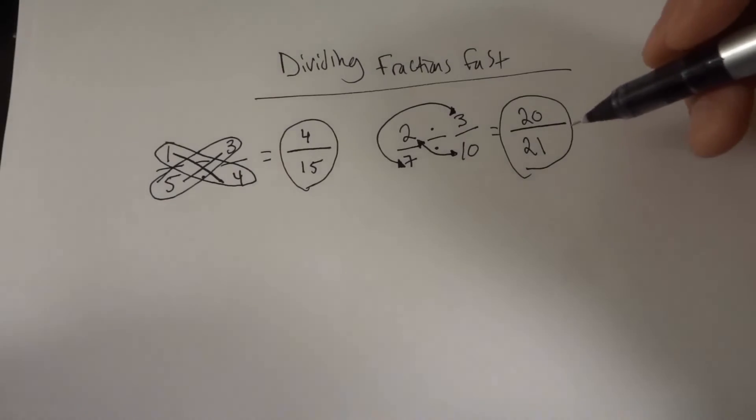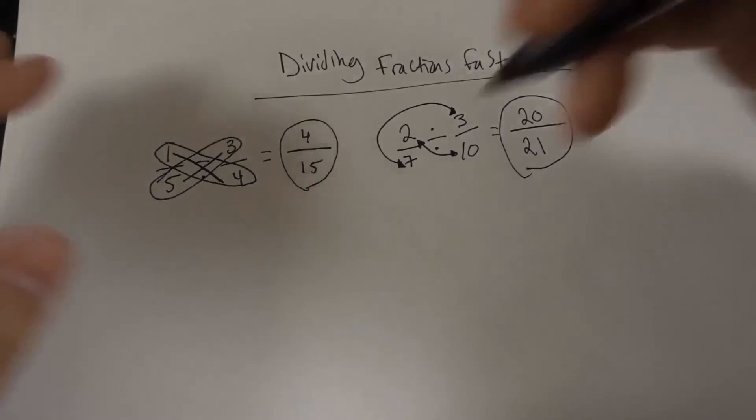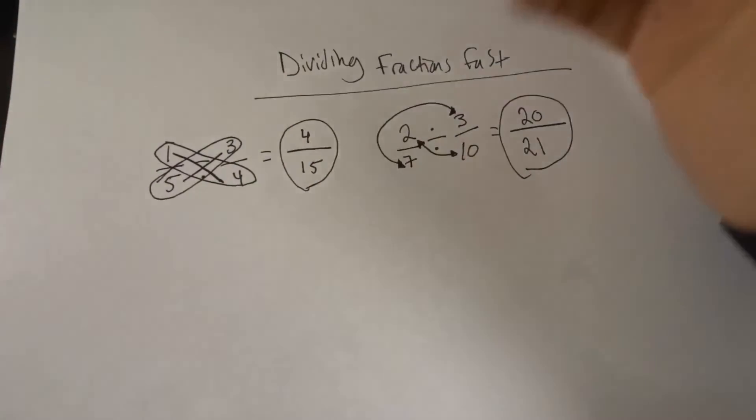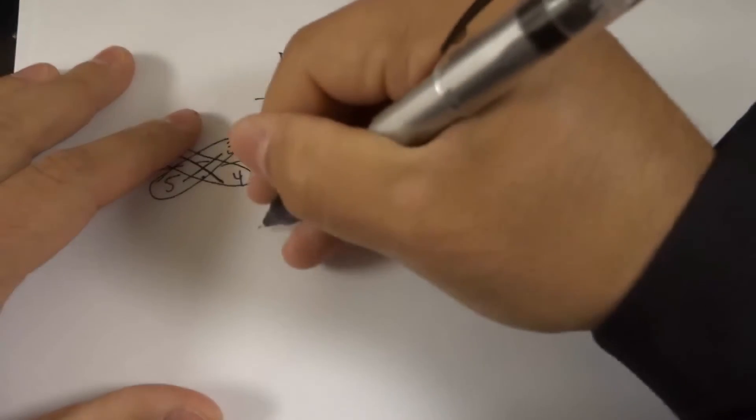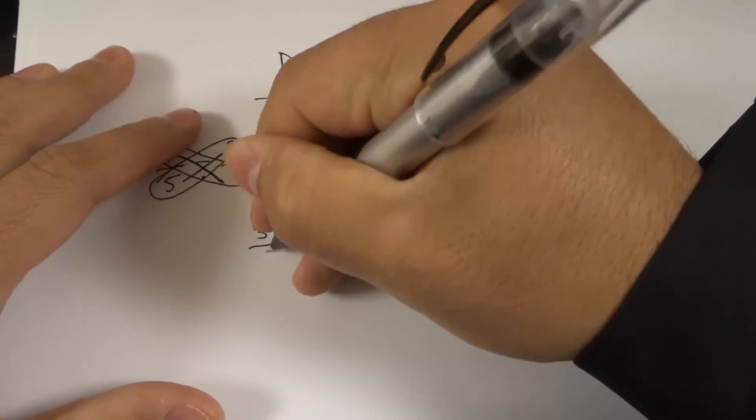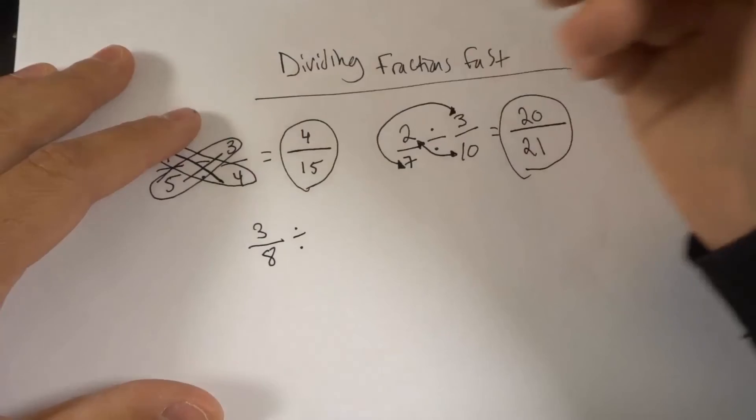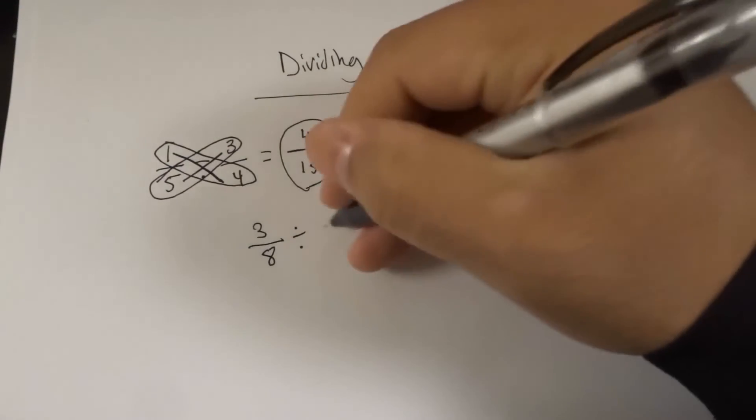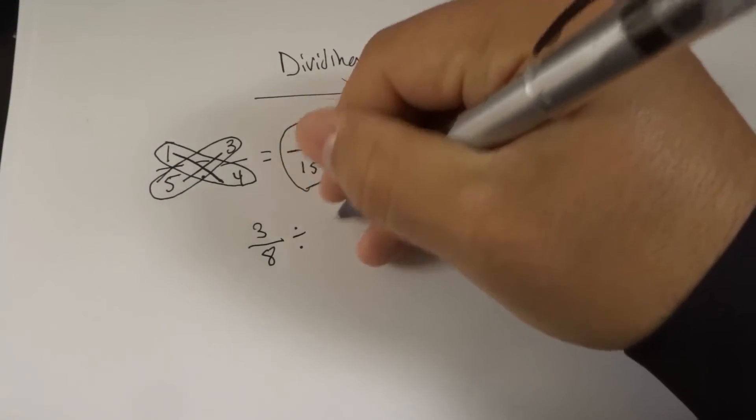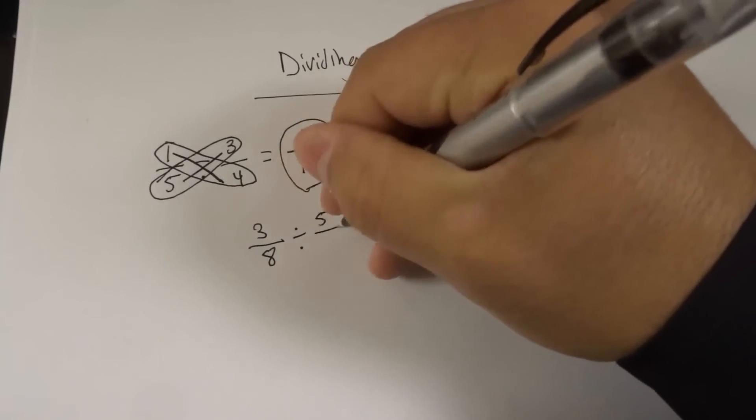And you can just rinse and repeat this method. Let's go over one more quick example. I'm going to choose two bigger numbers, even bigger numbers. Let's do 3 eighths divided by, let's see what I can think of, 3 eighths divided by 5 over 11.